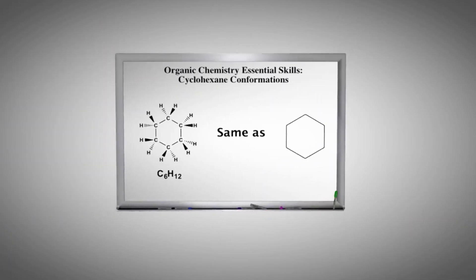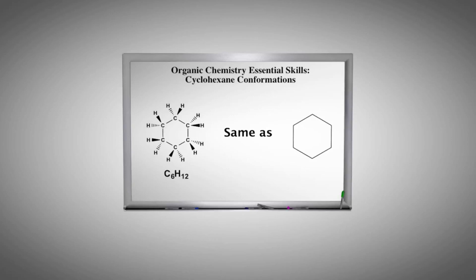Now, let's examine conformations involving the cyclohexane ring, which is a commonly encountered ring system in the study of organic chemistry. From the two-dimensional Lewis structure, it would appear that the internal bond angle for all carbon-carbon bonds is 120 degrees.